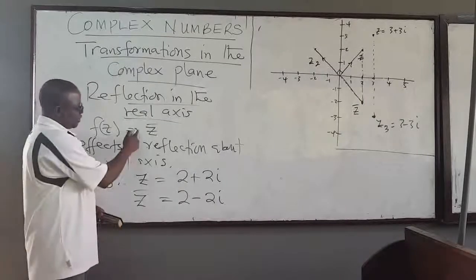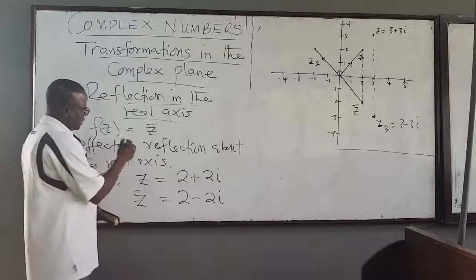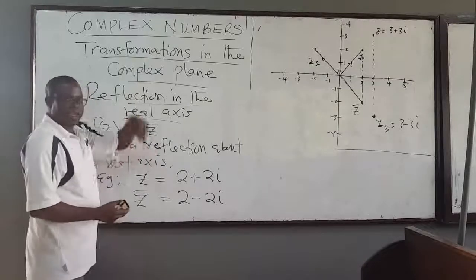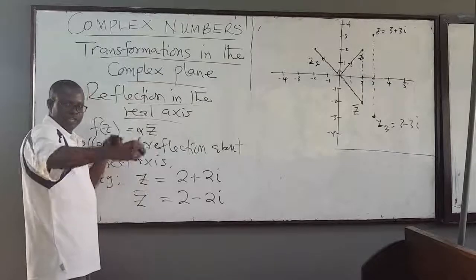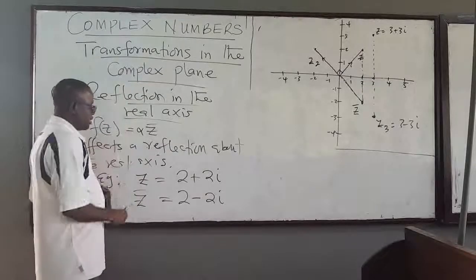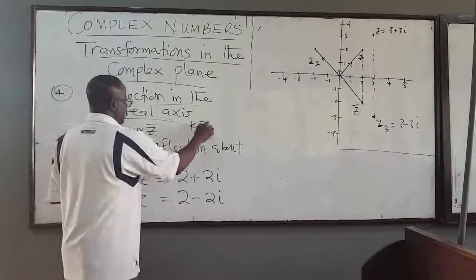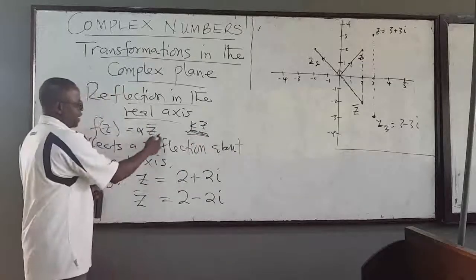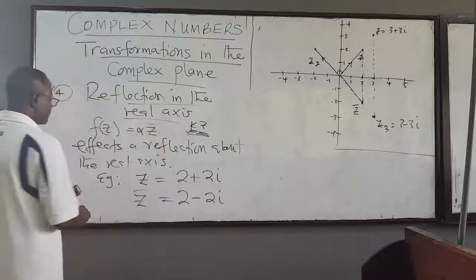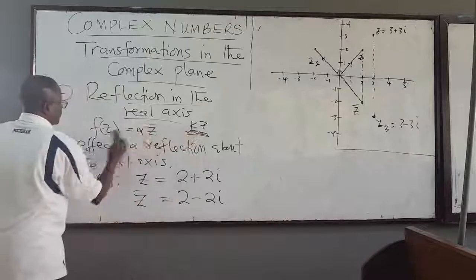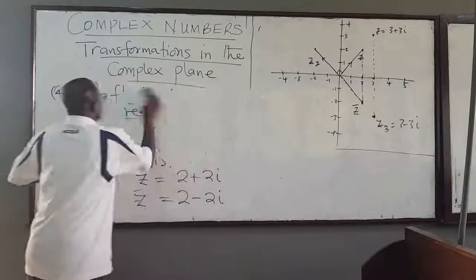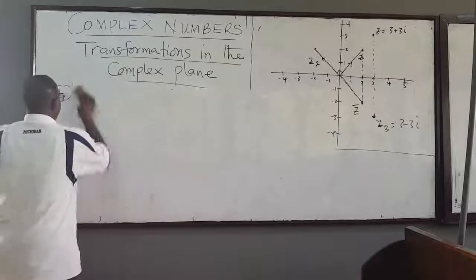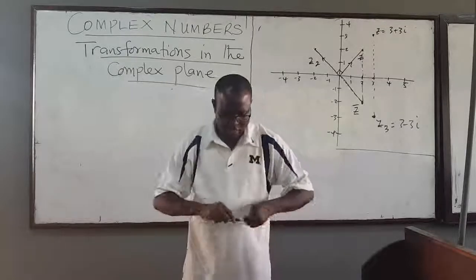So that is our reflection. The next, fifth transformation we want to look at is inversion. Inversion is actually a combination of reflection and scaling — a reflection about the real axis followed by a stretch or scaling.